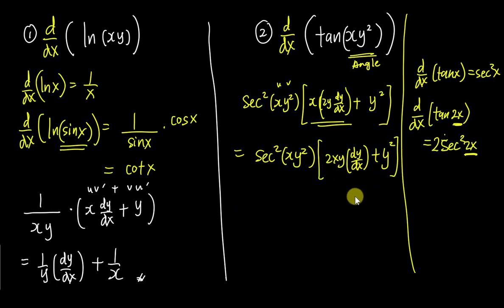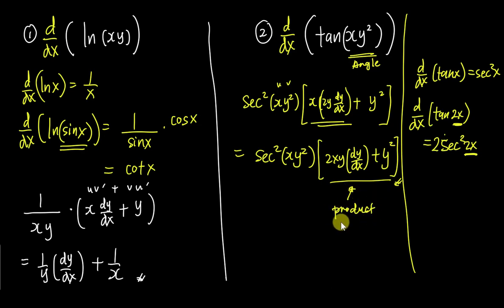No need to expand it. Basically what happens inside the bracket is just the product rule. If you have no idea what the product rule is, go check out the product rule of differentiation. And if you don't know why we get sec² x, you need to revise how to differentiate trigonometry.